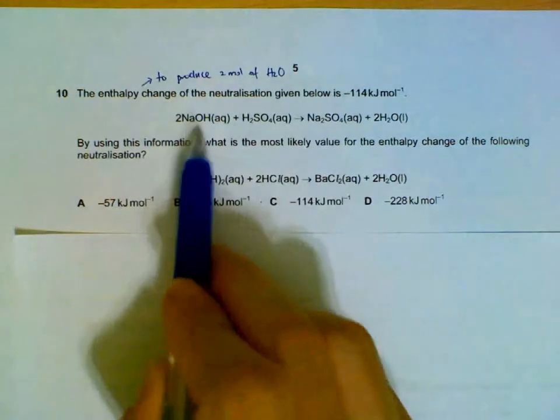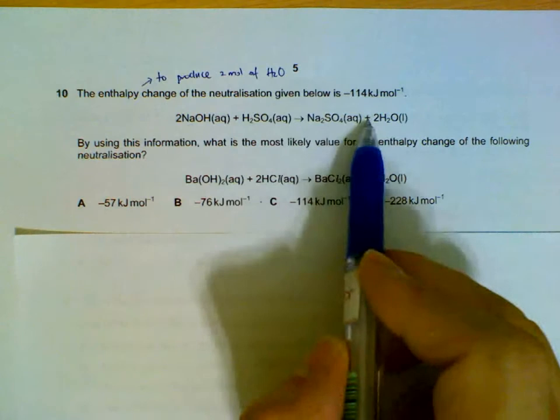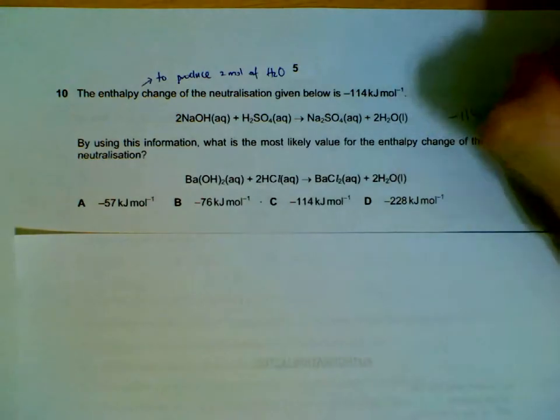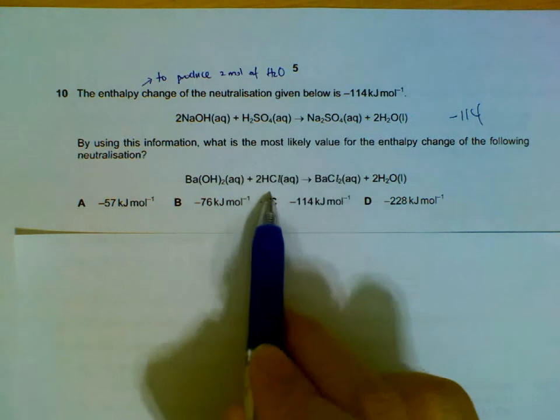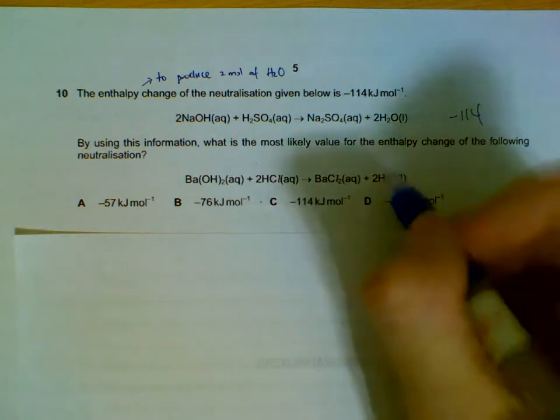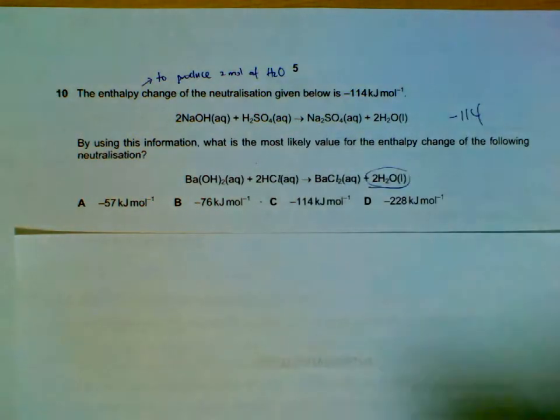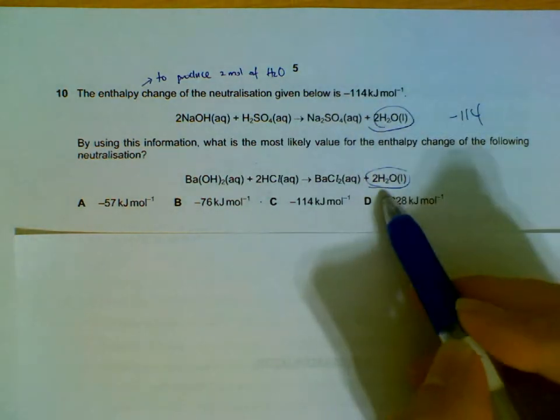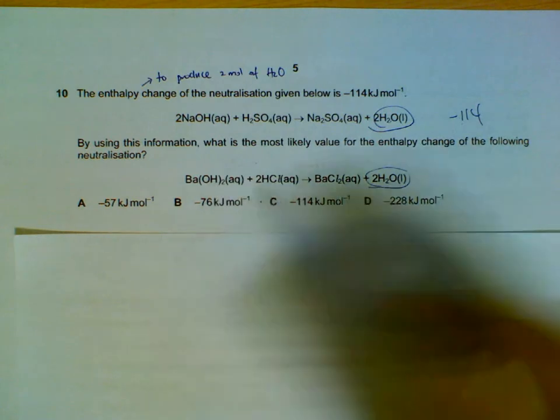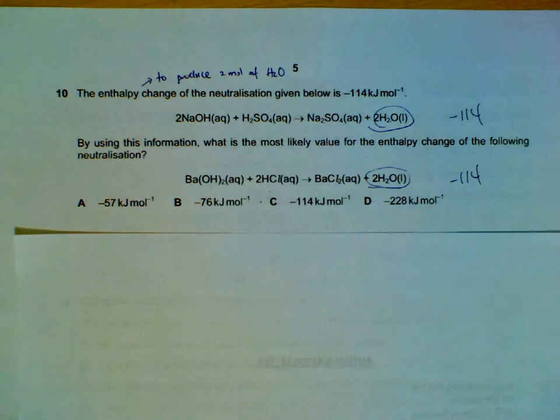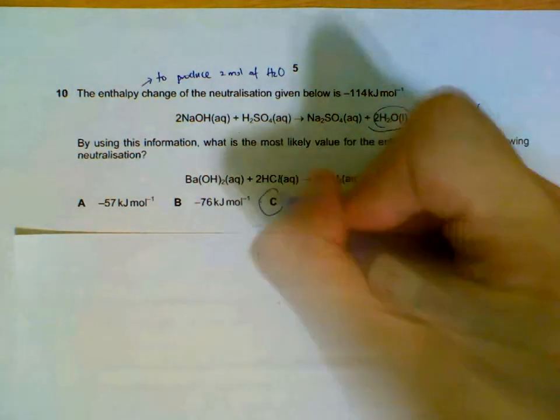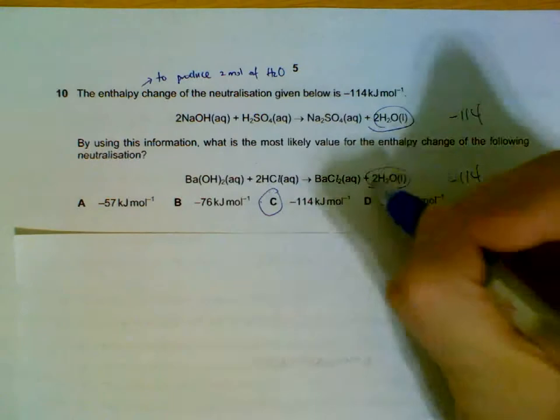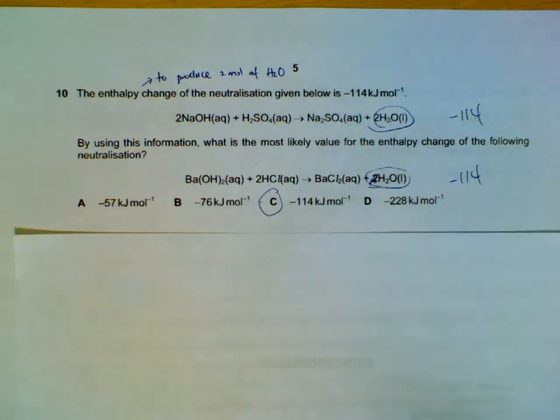The enthalpy change for this reaction will be minus 1,114, exothermic. And then they compare: what will be the enthalpy change for the reaction at the bottom? Well, neutralization will be based on the amount of water formed. So to form two moles of water, we have minus 1,114. This reaction also produces two moles of water with a strong acid and a base, so the heat of reaction will actually be the same. If this was one mole of water formed, you take 1,114 divided by 2 to compare. But these are two moles formed, two moles formed, that's why it's the same.